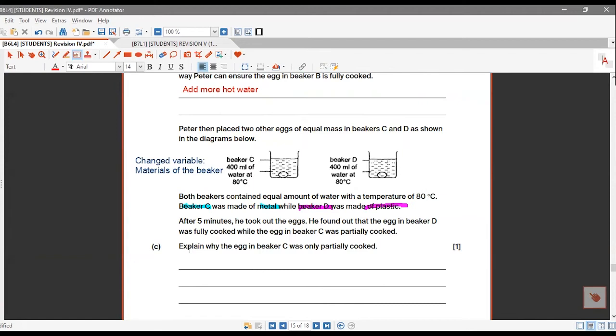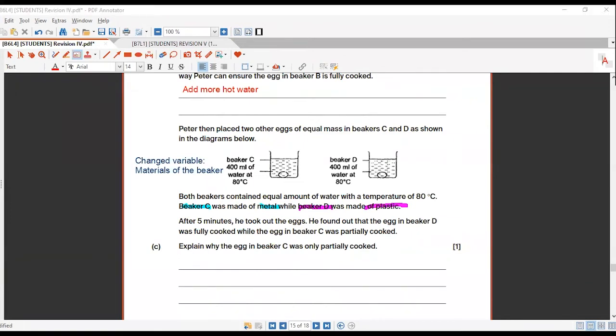I know what you will tell me. Hey, but teacher, you say that metal is a good conductor of heat, right? How come the egg in C is only partially cooked? Would you want to think along this line on why do you think C, the egg in C is only partially cooked? What could be a possible reason?